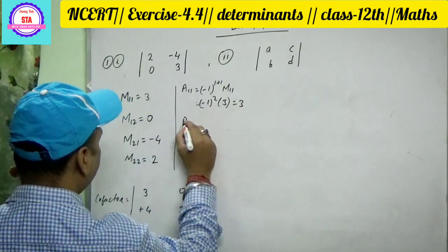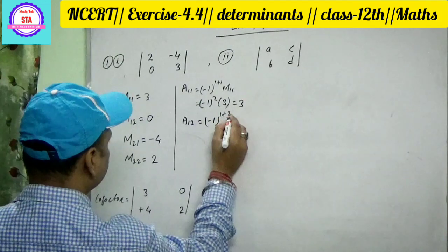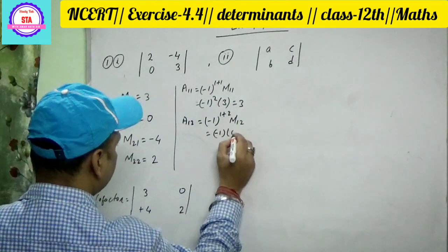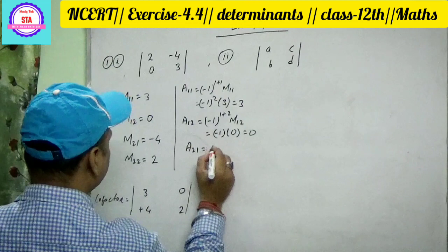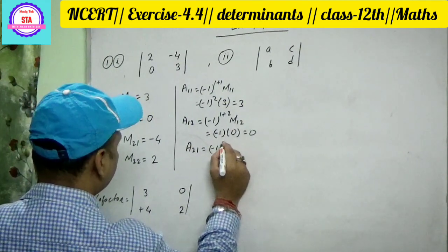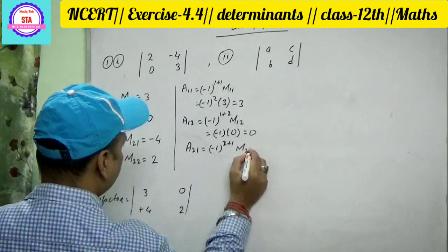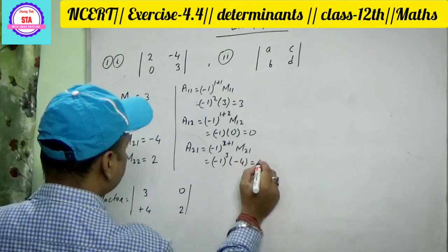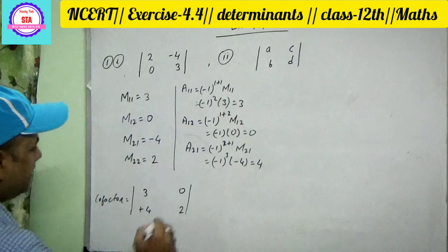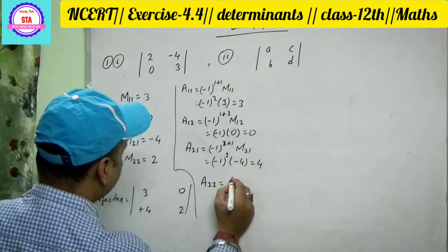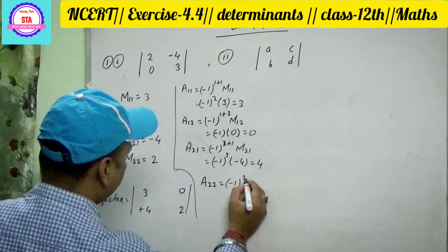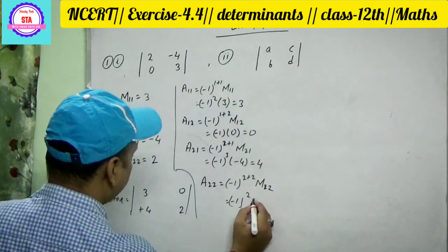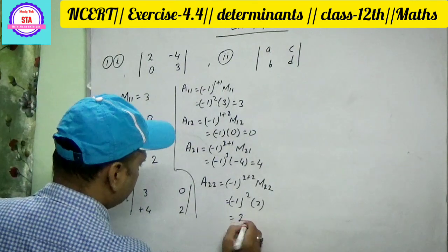That is 3. Minus 1 into 0, that is 0. A21 is minus 1 to the power 2 plus 1. M21 is minus 1 to the power 3, times minus 4, that is 4. Similarly, A22 is minus 1 to the power 2 plus 2. M22 is minus 1 to the power 2 into 2, that is 2.